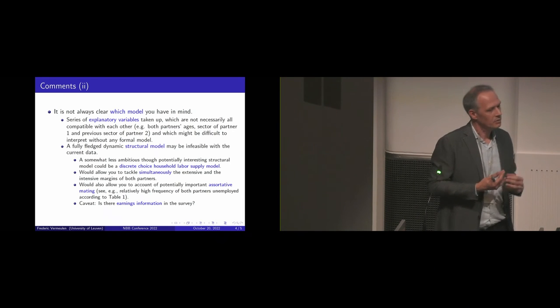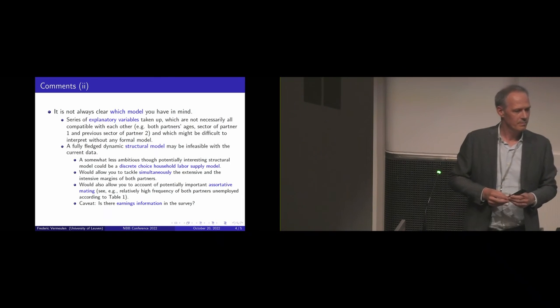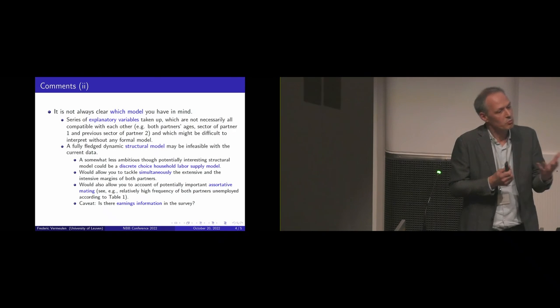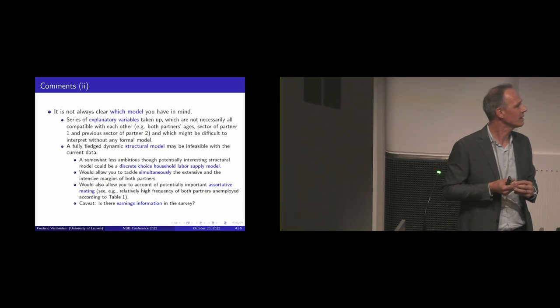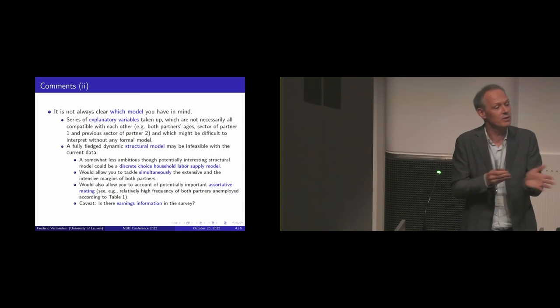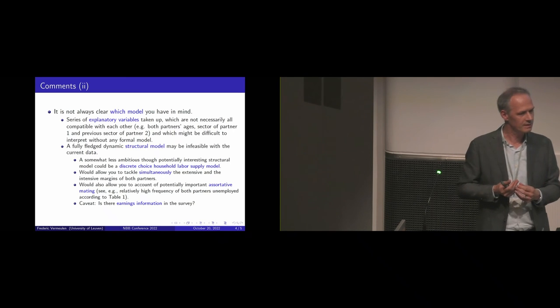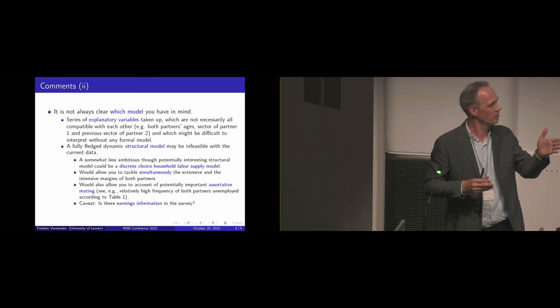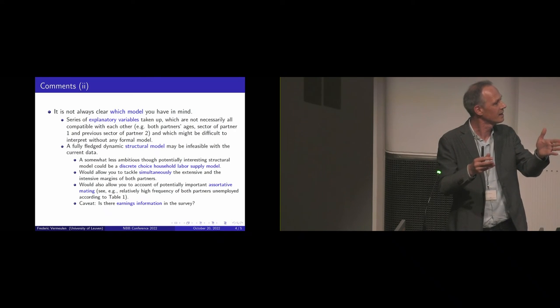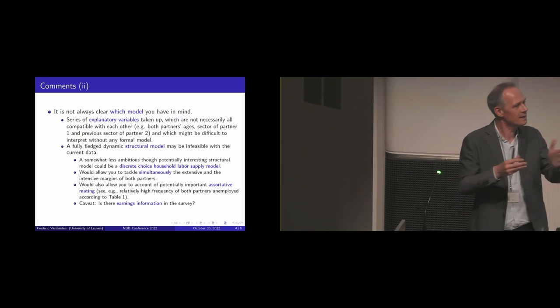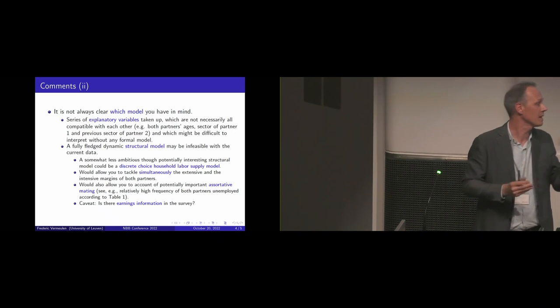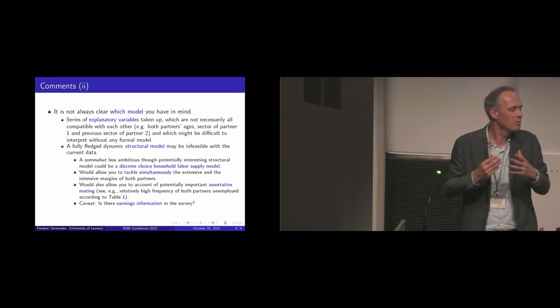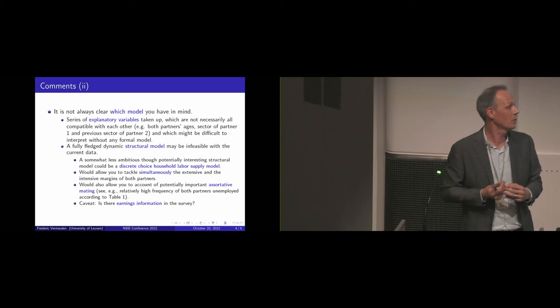Another thing that was striking in your data and you mentioned it also in the presentation is that we are in direct evidence of assortative mating. Of course, direct evidence in terms of education level. But in one of your tables, I think table one, you also see that if one partner is unemployed, the probability that the other partner is also unemployed is very high or relatively high. So in that sense it also shows assortative mating in terms of skills, earnings, capacity, etc. I think a structural model would also allow you to analyze this a bit further.